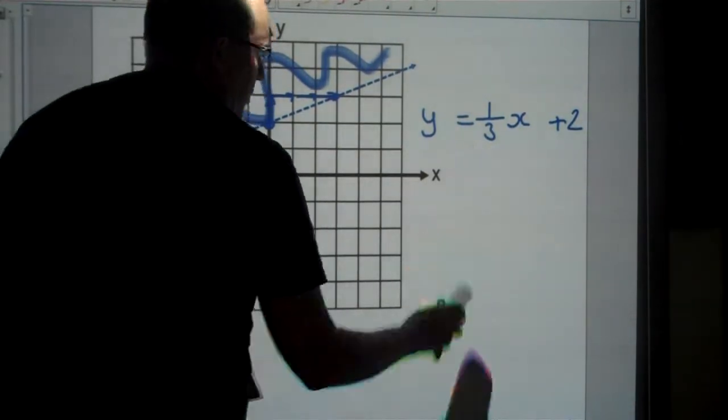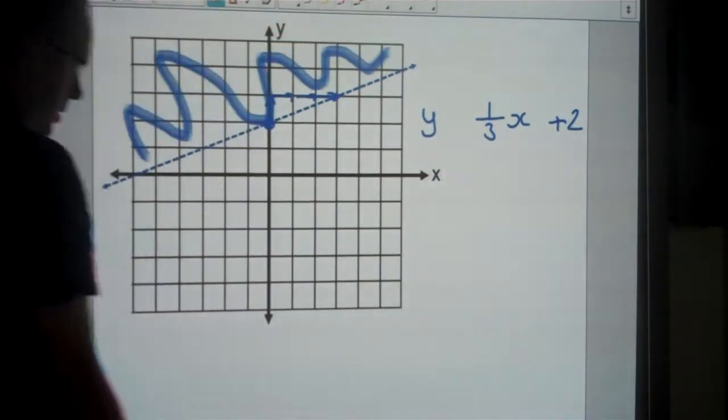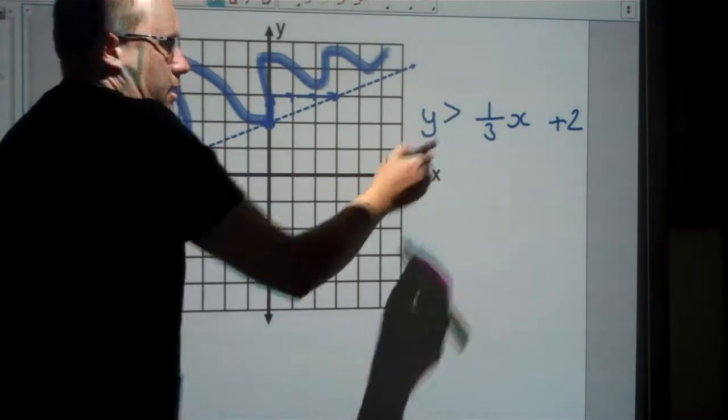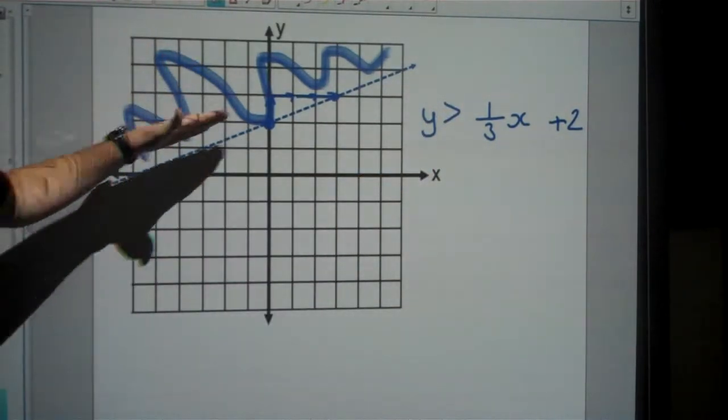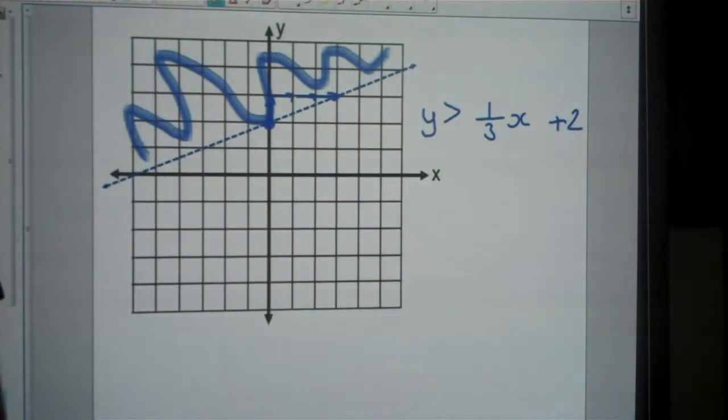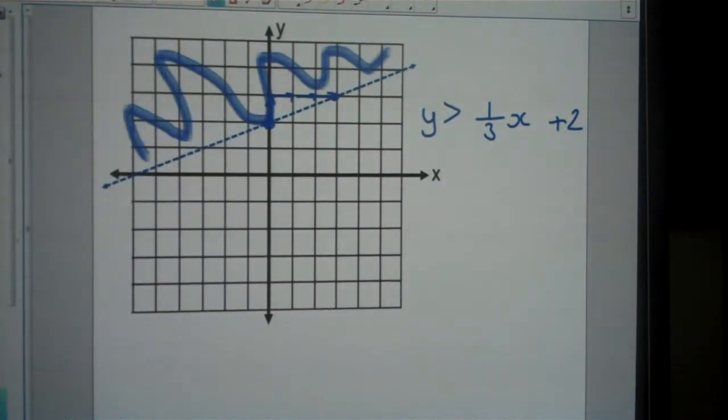Now I want to get rid of the equals sign because this is an inequality. It's shaded above, so I need greater than. This is also a dotted line, so there's no equals sign. The answer is y is greater than 1/3x plus 2.